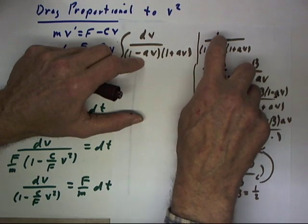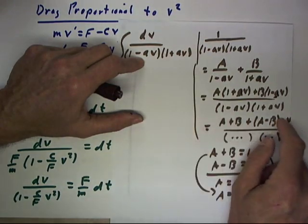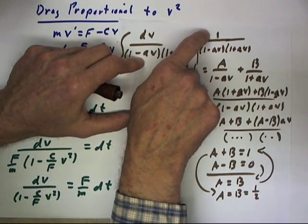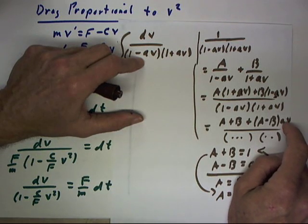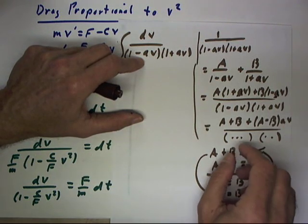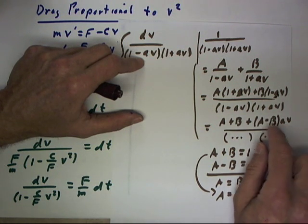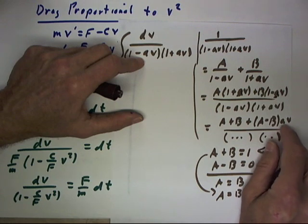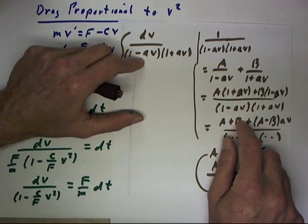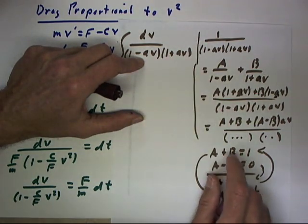Now, the numerator has only 1 so this numerator has to always be equal to 1 no matter what the value of v. That tells us that A minus B times little a is going to be 0 because if it was anything but 0, then a change in v would cause a change in this numerator and the numerator is constant.